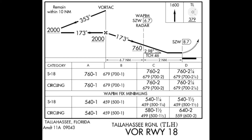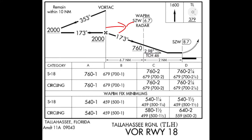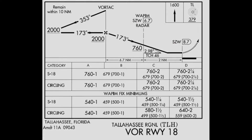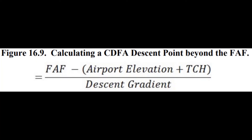But what about an approach with the VDA published inside of the FAF? It's still simple, but requires a little bit more math. All you have to do is divide the desired altitude to lose by the desired descent gradient. This will give you how many miles prior to the runway to start your descent in order to get a constant descent from your final approach fixed altitude to your runway at the prescribed threshold crossing height. This equation sums up that process: take the final approach fixed altitude and subtract the airport elevation and threshold crossing height, then divide that by the descent gradient, which is just the glide slope angle times 100.